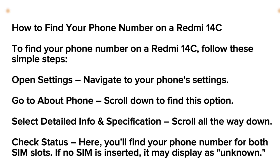Navigate to your phone settings, then go to the About section. Scroll down to find this option, select Title and Specification, then scroll all the way down to check Status. Here you'll find the phone number for both SIM slots.